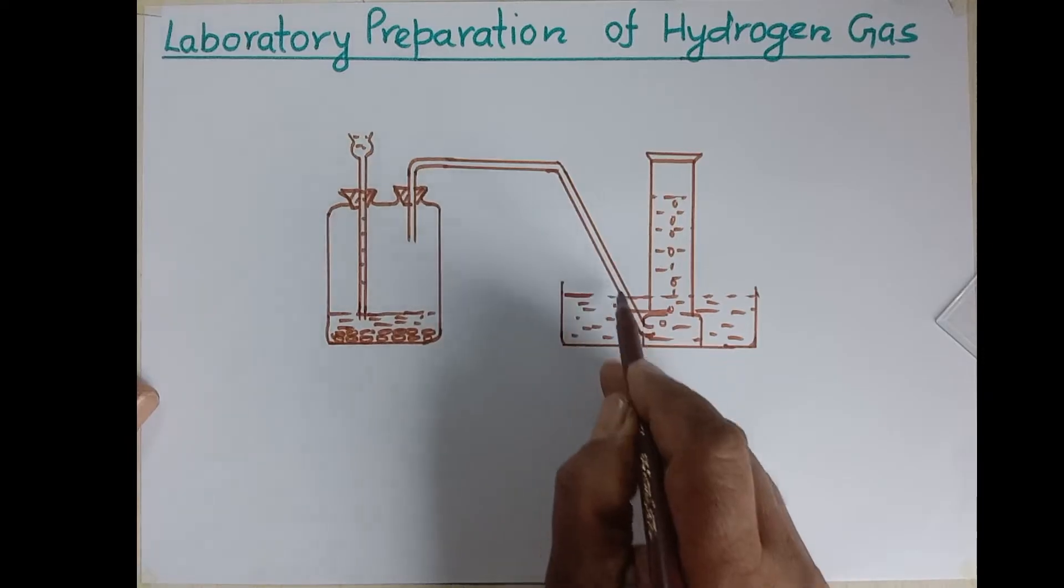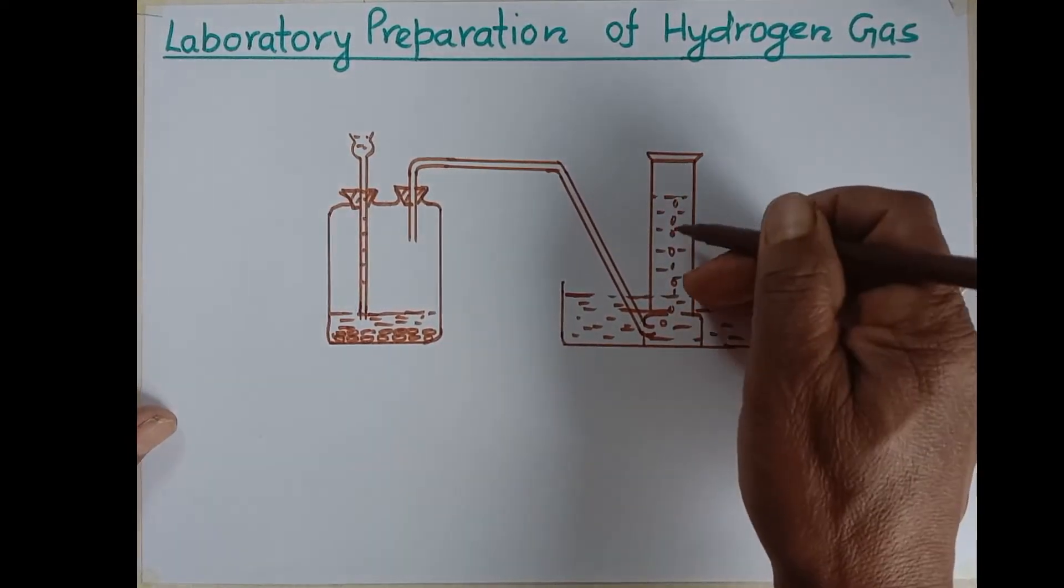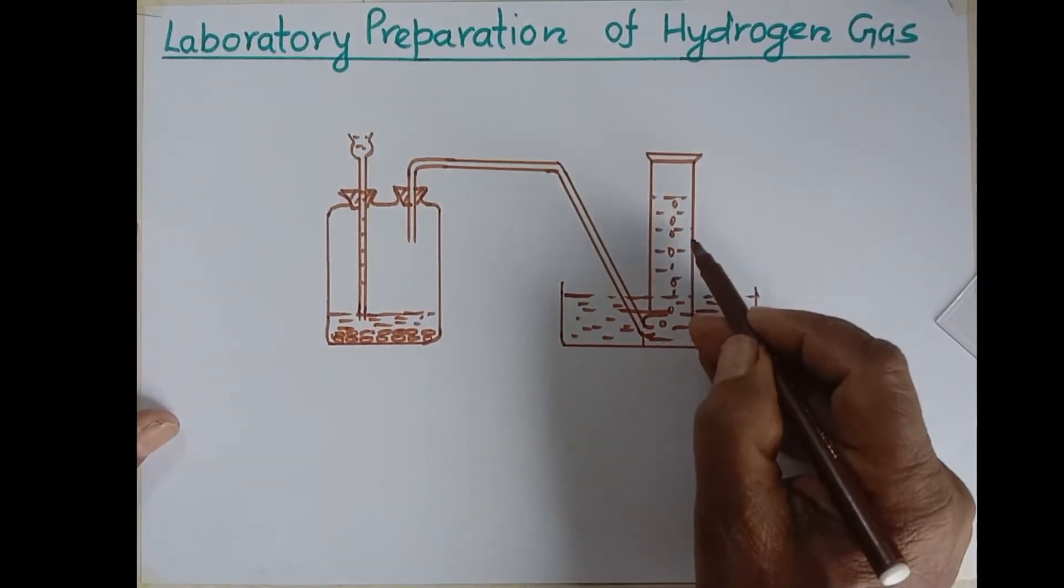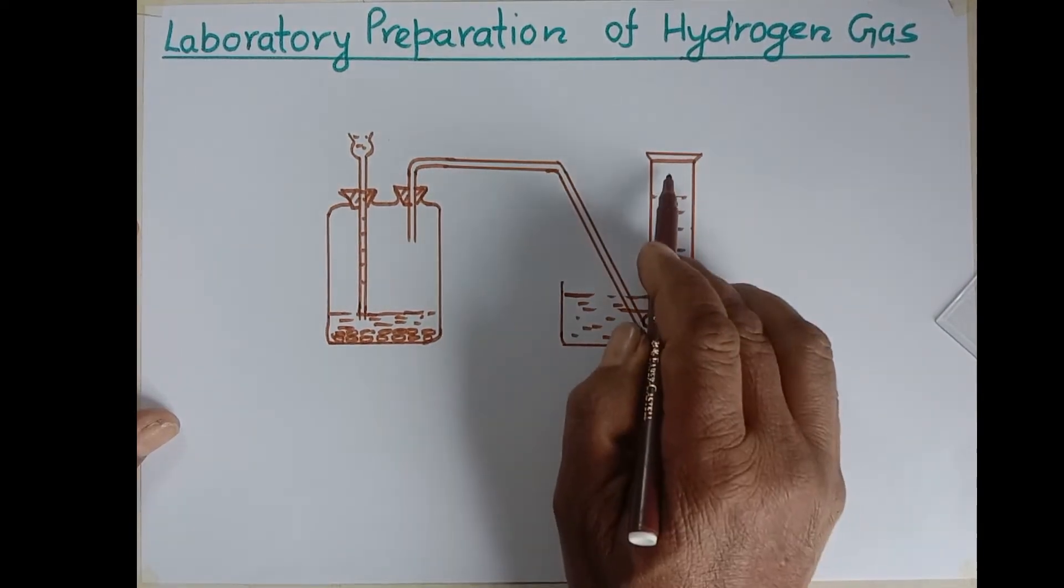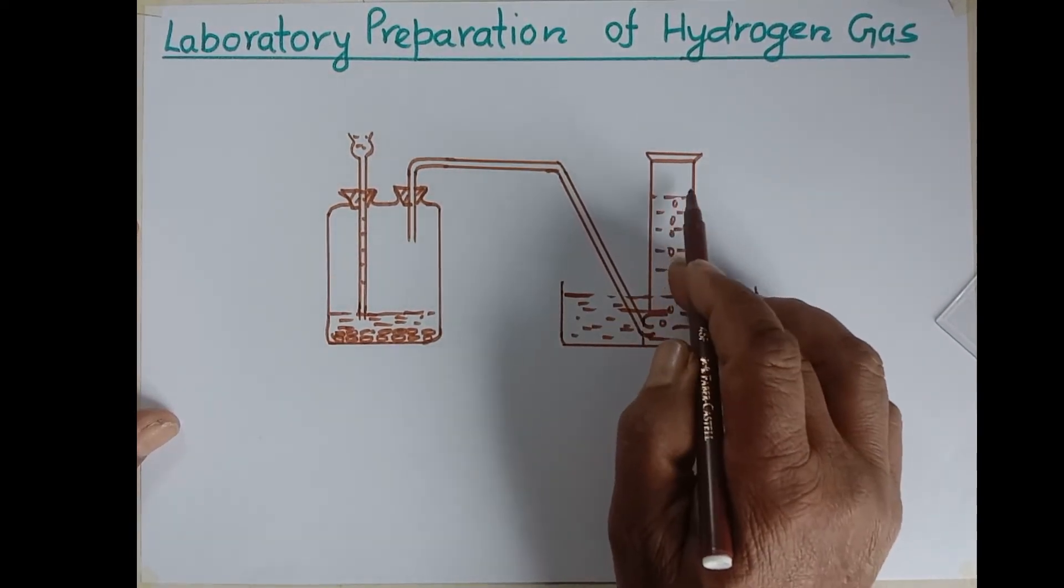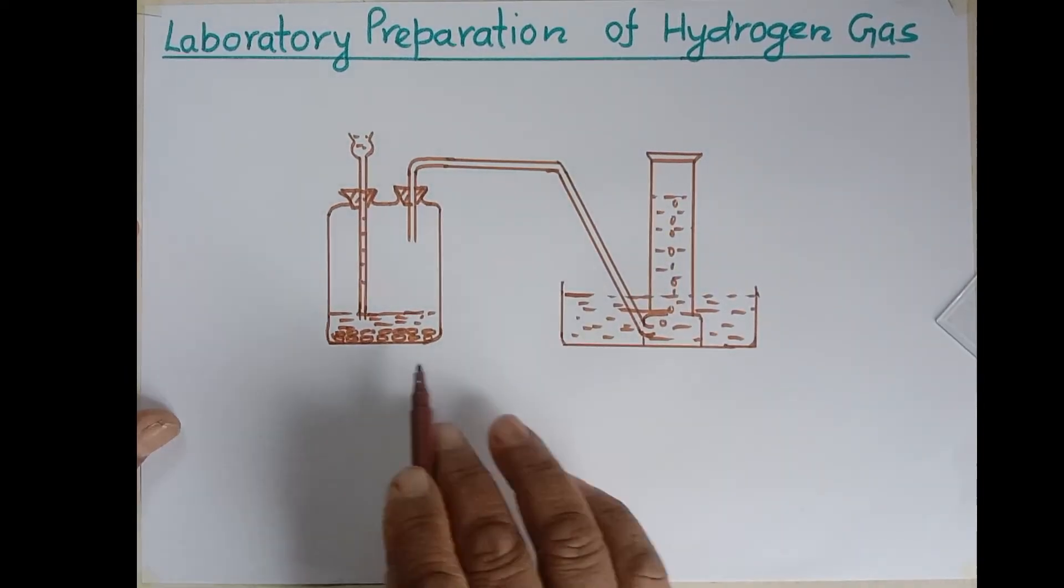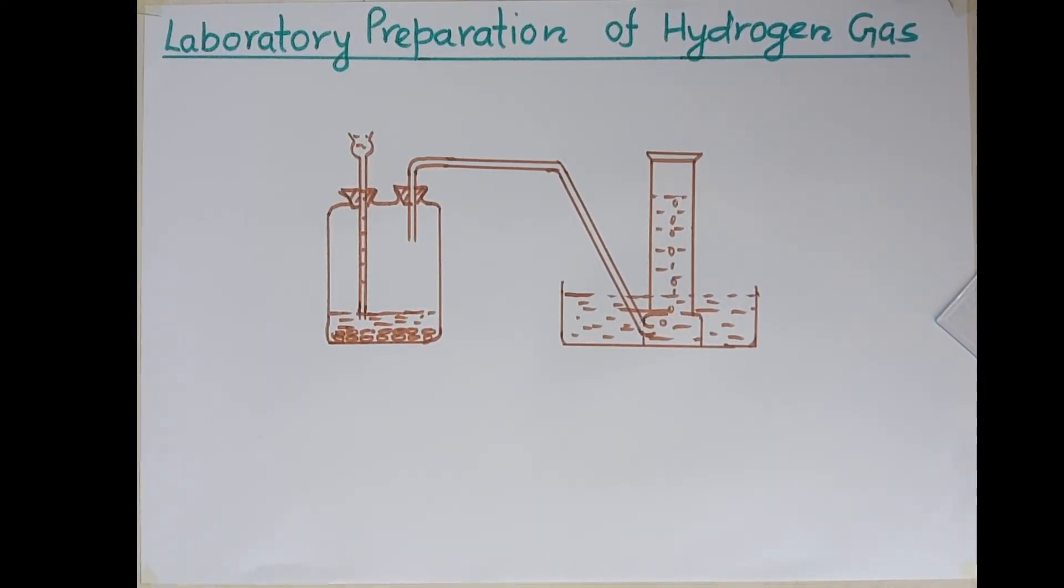Which comes through delivery tube and it displaces water in the downward direction and begins to collect in the gas jar from the top. This way hydrogen gas is prepared in laboratory.